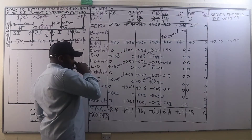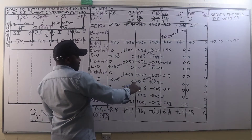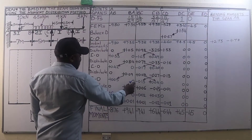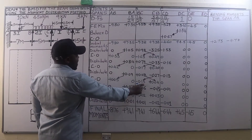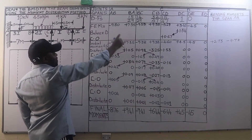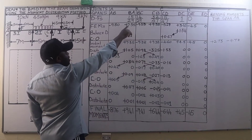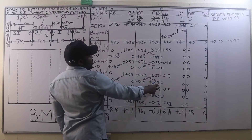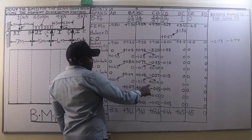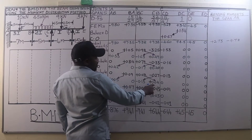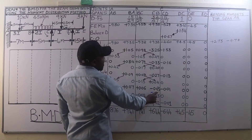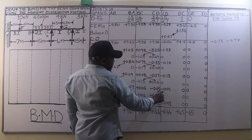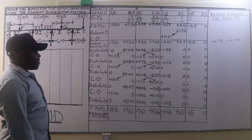Distributing: we have an excess moment of positive 0.13. 0.13 times 15/29 is 0.07; 0.13 times 14/29 is positive 0.06. At joint C we have an excess moment of negative 0.04. Negative 0.04 times 32/47 is negative 0.03; negative 0.04 times 15/47 is negative 0.01.